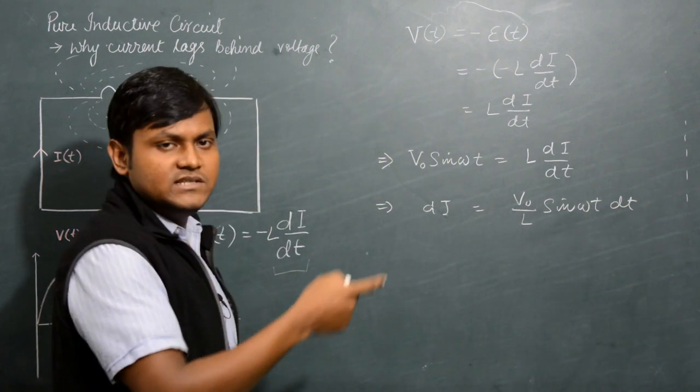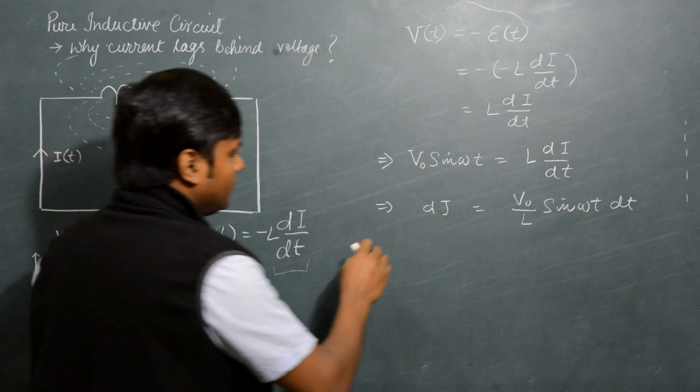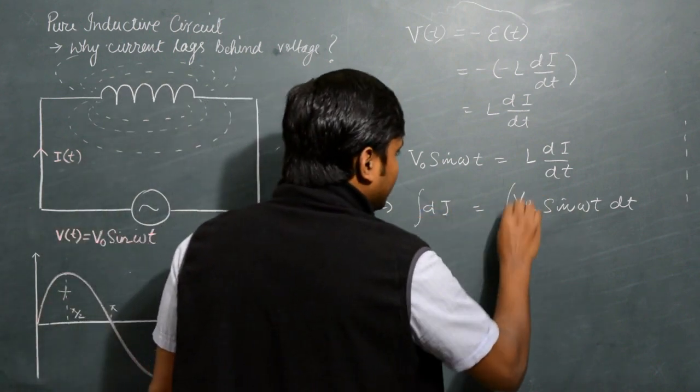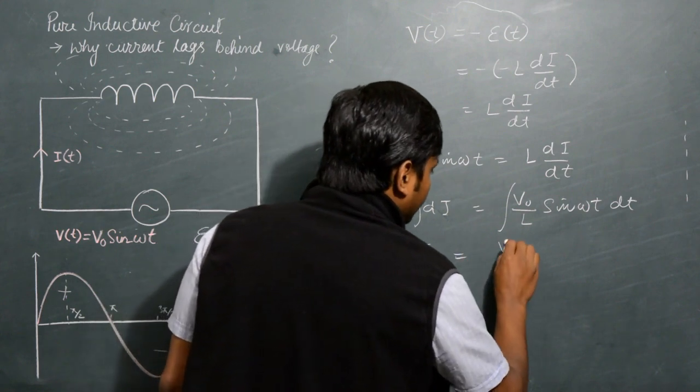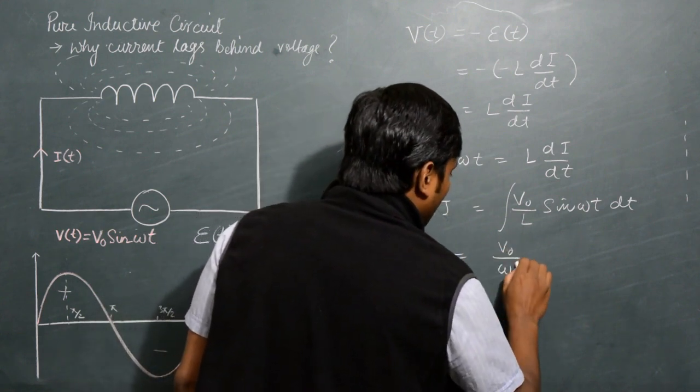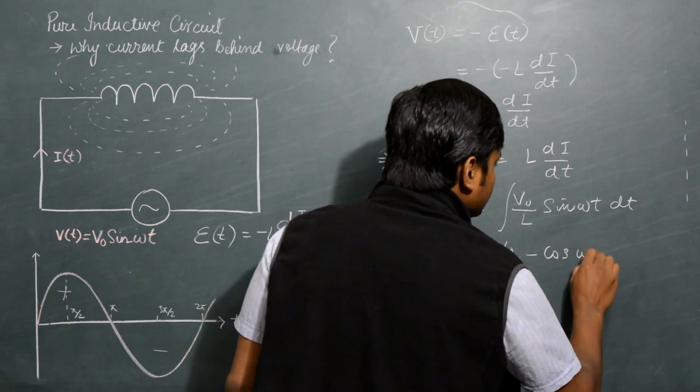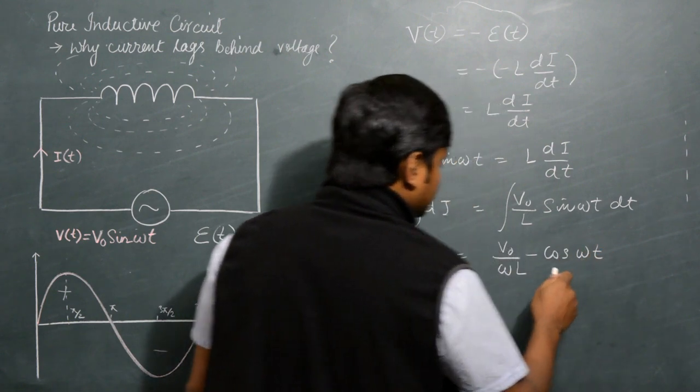Now if I integrate both these sides with the proper limits, I end up getting... If I integrate both these sides, I get I equals V₀/(ωL) times negative cos(ωt).